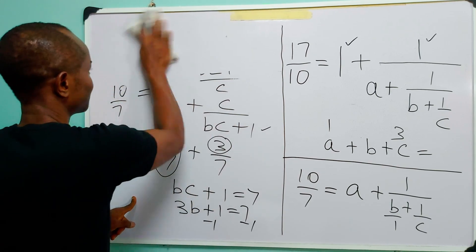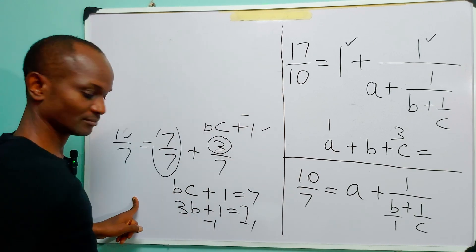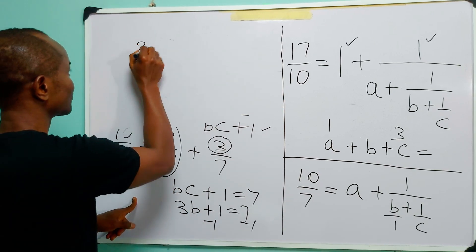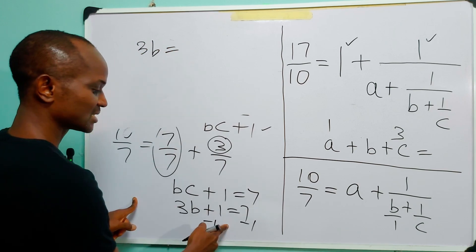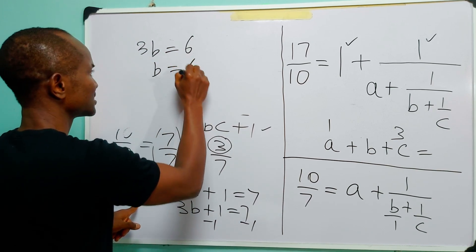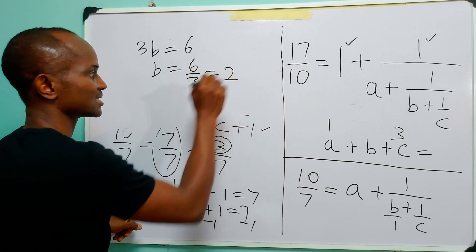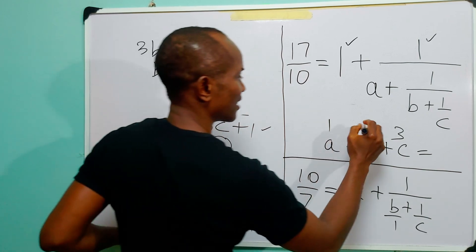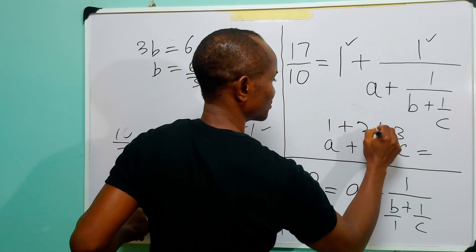...you have that 3B is equal to 6 and B is equal to 6 over 3, which is equal to 2. So we have that B is equal to 2...